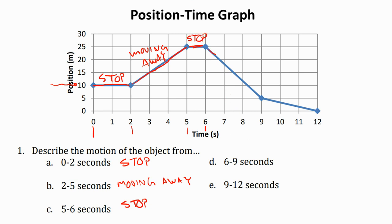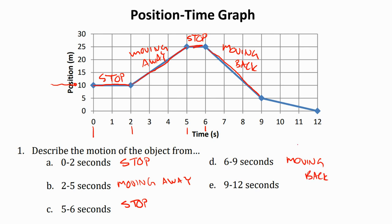What about between six and nine seconds? Here, the slope, instead of going up, is going down. Does that mean I'm going down a hill? No — this is not a picture. What it's saying is my meters away from home is going down, which means I'm getting closer to home. From six seconds to nine seconds, I'm actually going closer to home — moving back towards home. Anytime you have a downhill slope, you're going back towards the origin.